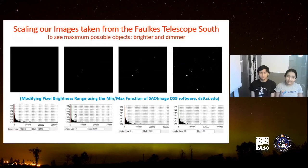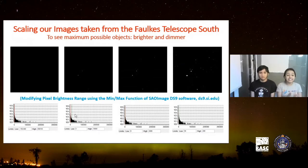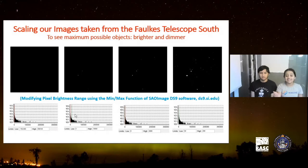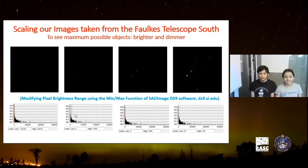I had to decrease the pixel brightness range so I could actually see objects in the image. As you can see in the four figures, the first image is black, but slowly you can see objects appear — first only the brightest ones, and then on the last figure, lots of objects become visible. The bottom graphs show the brightness range: in the first, it's from minus 200 to almost half a million, which was too much. In the last, it's reduced to 50 to 200. Now with the image scaled, it was time to actually start the analysis.